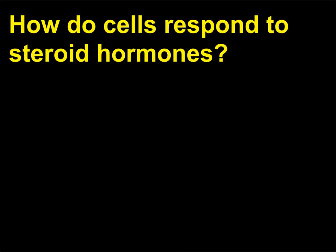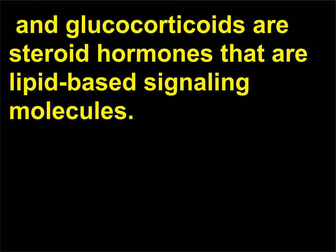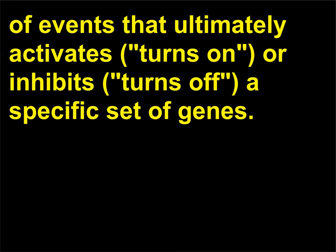How do cells respond to steroid hormones? Progesterone, estrogen, testosterone, and glucocorticoids are steroid hormones that are lipid-based signaling molecules. After entering a target cell, the steroid hormone binds to a receptor protein and starts a cascade of events that ultimately activates (turns on) or inhibits (turns off) a specific set of genes.